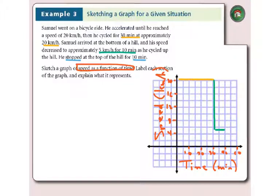And last but not least, he stopped for 10 minutes. So stopping means the speed is 0. Speed went down to 0 for the next 10 minutes.